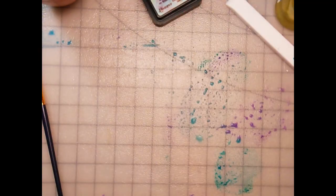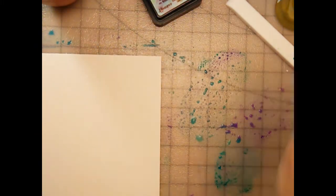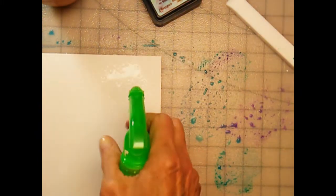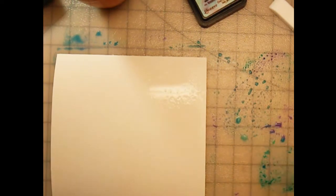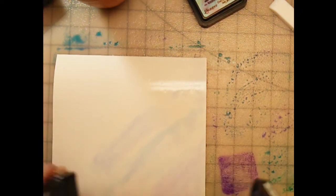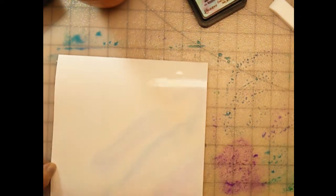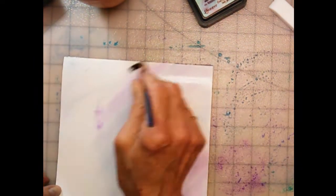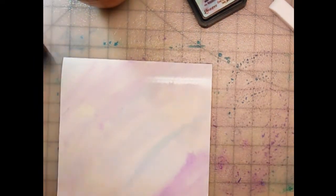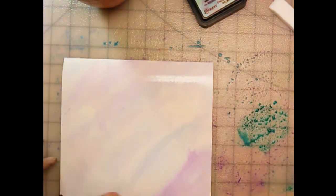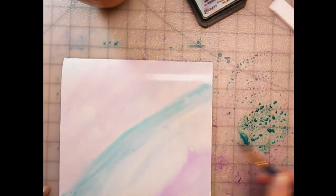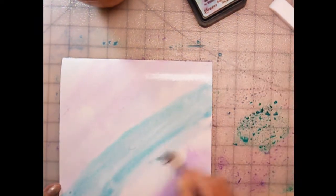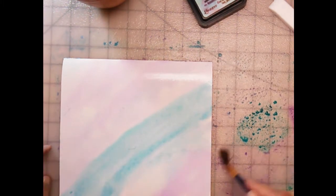And then I ended up using Distress inks in Tumbled Glass, Wilted Violet, Peacock Feathers and Blueprint Sketch and just kind of watercolored a base on this. I'm just going back and forth adding different colors and really filling in that background with a variety of these blue and purple colors. These are actually my favorite colors.